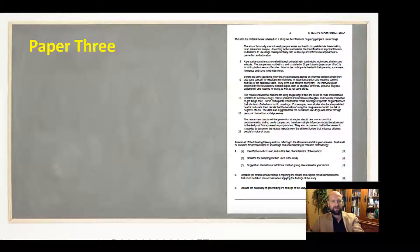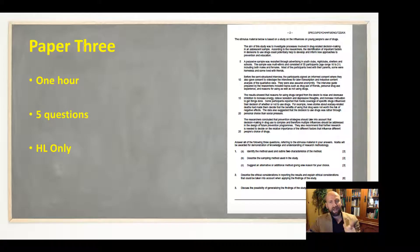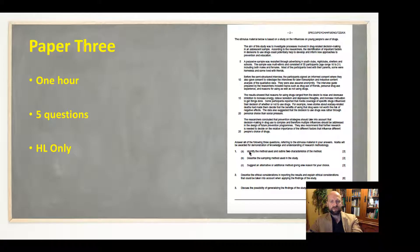Just a quick recap: Paper 3, you have one hour, five questions. Remember, this is higher level students only, so if you're standard level you don't need to worry about this. You're going to have a stimulus paper that looks like this — and you've got the five questions down here. These three are always the same, this will be one of the two possible ethics questions, and this is one of the three possible evaluation discussion questions.